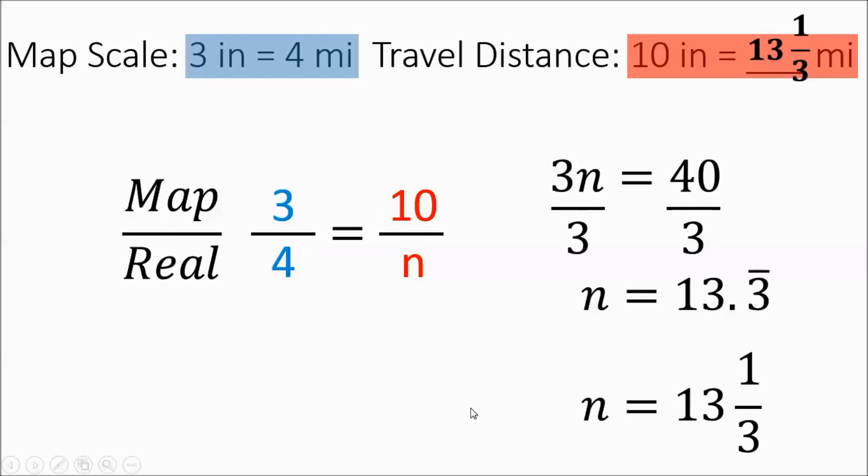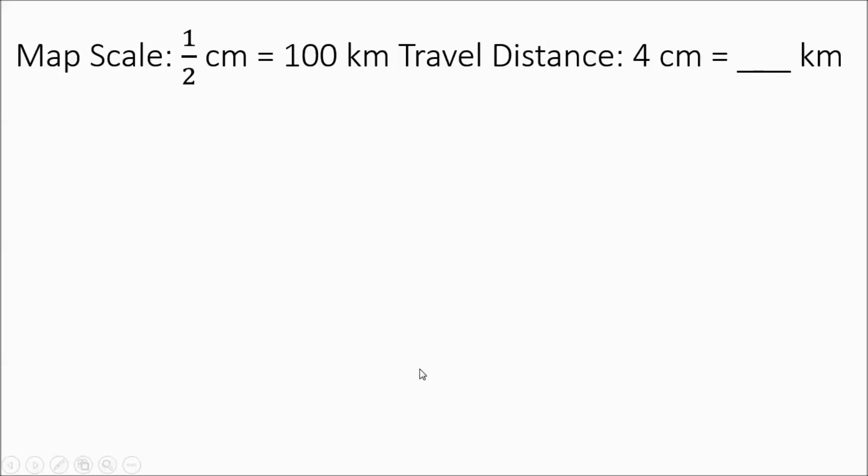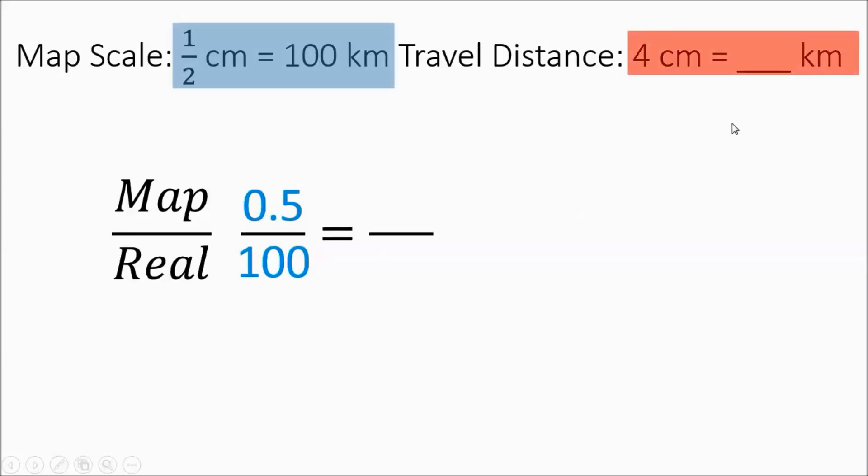Okay, so on this one, we have a map and the reality and it says that half a centimeter represents 100 kilometers. So on the map, half a centimeter, 0.5 goes with 100 kilometers. So the distance that you want to drive or walk is 4 centimeters and then you're going to figure out how many kilometers that really is. 4 over n, 4 centimeters. That was on the map. Anything with the maps up top.